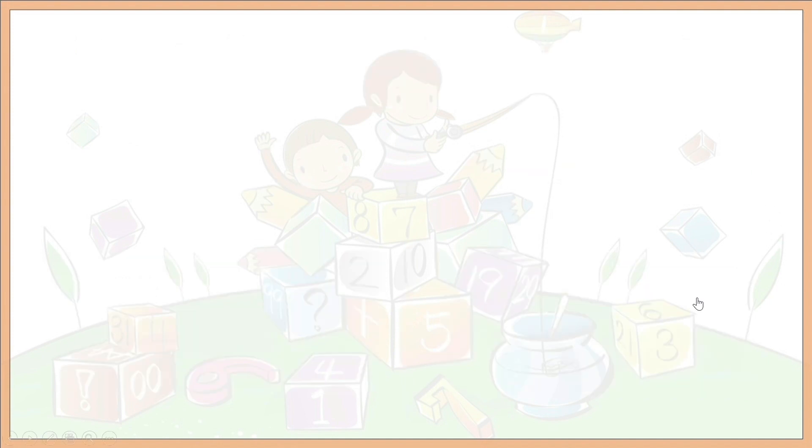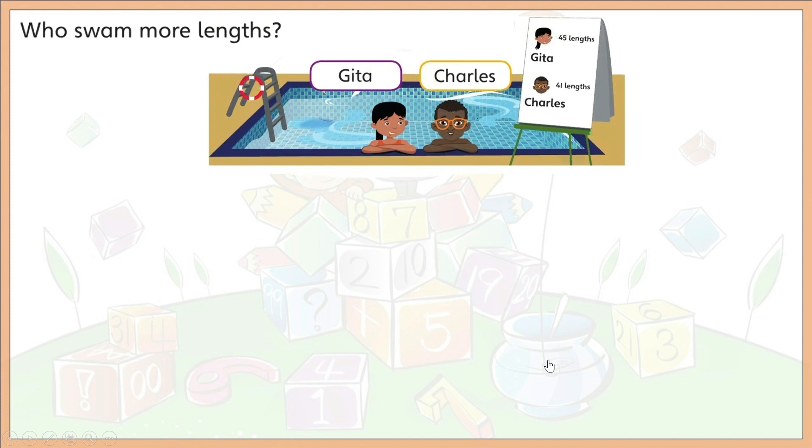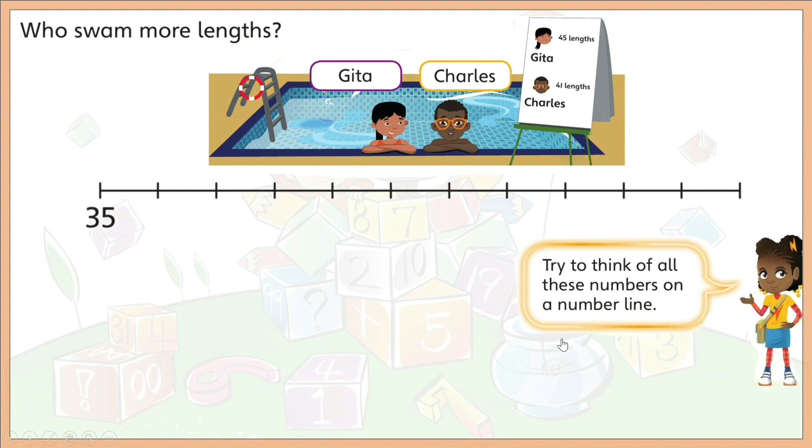Let's have one last activity before you do your book work. Let's find out who swam more lengths. Is it Gita or Charles? Look at this score sheet and use this number line to help you out. According to Slo, try to think of all these numbers on a number line. So, where do we find Gita's number or 45? Okay, how about 41? There.